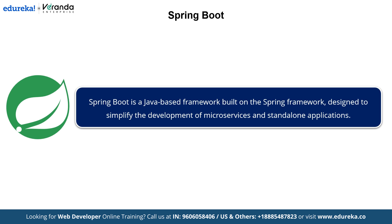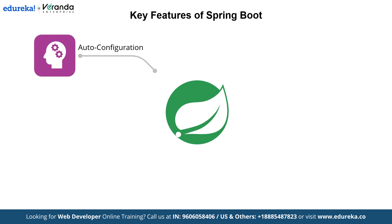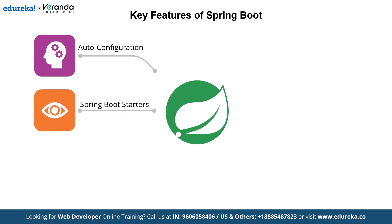Spring Boot is widely used for enterprise-level applications and is perfect for teams looking to build scalable and efficient backend systems. Let's take a look at its key features. First is Auto-Configuration — Spring Boot automatically configures your application based on the libraries and dependencies you include, reducing the need for manual configuration and saving time and effort. Next are Spring Boot Starters — predefined dependency packages that help you kickstart your project by bundling the necessary libraries to get your application up and running quickly.